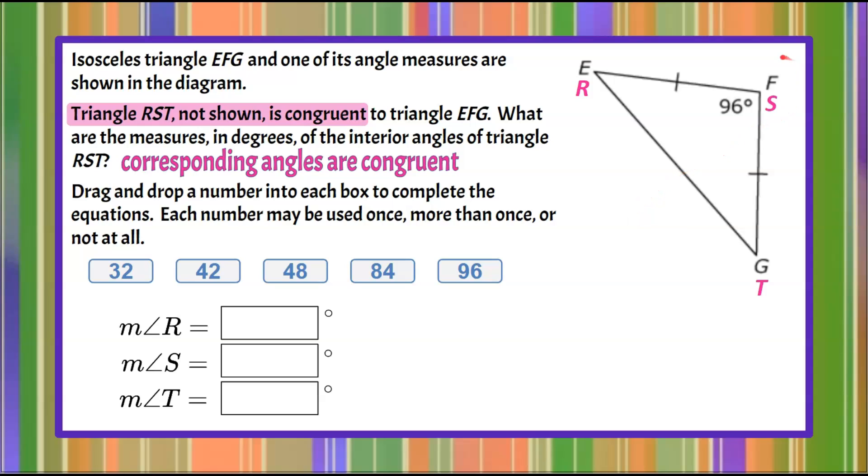So we can see right here since angle F and angle S are the same that angle S in triangle RST is going to be 96 degrees. So we're going to take our 96 and drag it and there we have the measure of angle S.